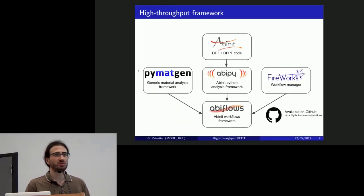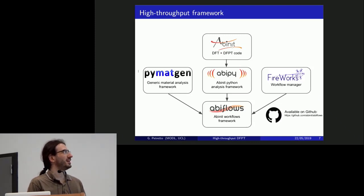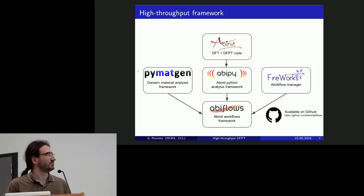So for the high-throughput part, I think Matteo already made this quite clear. I will maybe stress it once more. So for the high-throughput, I will say that ABiPy is not strictly for high-throughput. Abiflows, which is another package, is. And these rely and depend on all these other Python packages. And if you are willing to use it, you can find it on Github along with the other dependencies.